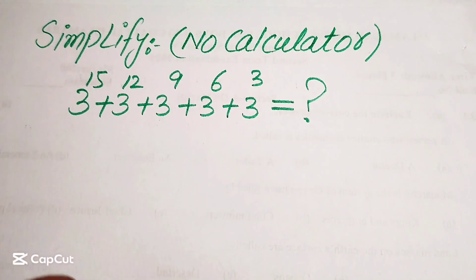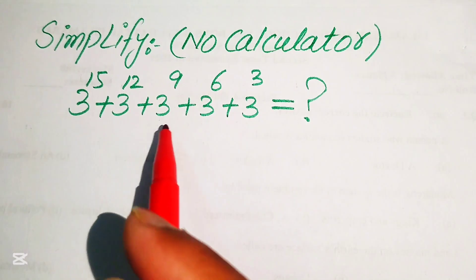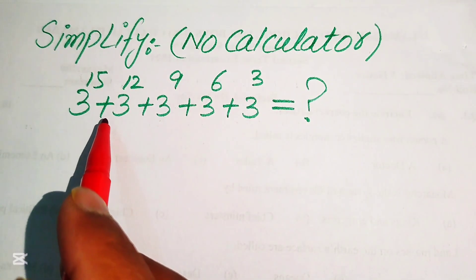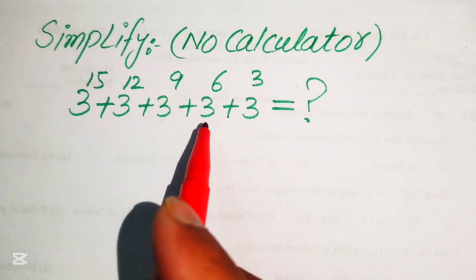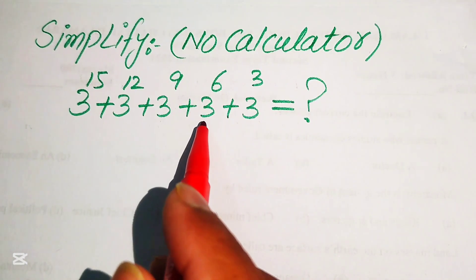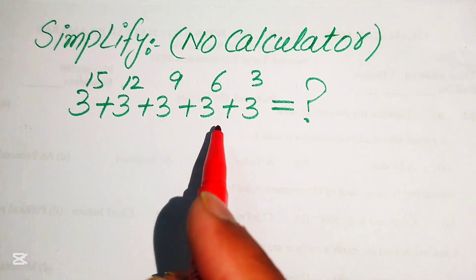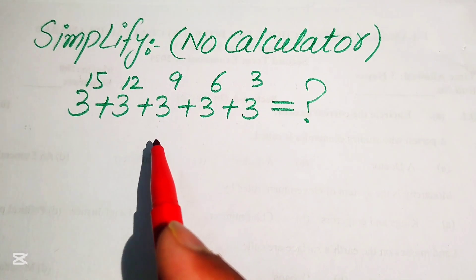Hello everyone. How to simplify this nice algebraic expression without using the calculator. If we have 3 to the power of 15 plus 3 to the power of 12 plus 3 to the power of 9 plus 3 to the power of 6 plus 3 to the power of 3, we can simplify this algebraic expression and we will show all of the working here.